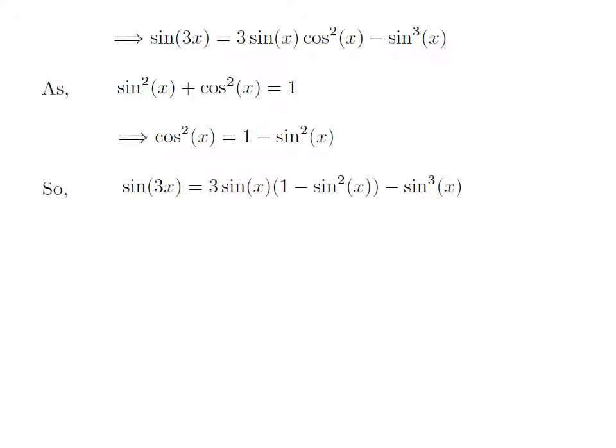Applying the above identity, sine of 3x is equal to 3 times sine of x into the whole of 1 minus square of sine of x, minus cube of sine of x. Expanding this expression, sine of 3x is equal to 3 times sine of x minus 3 times cube of sine of x minus cube of sine of x.